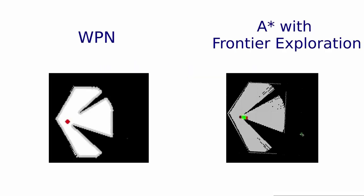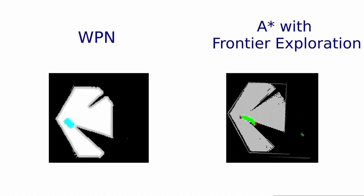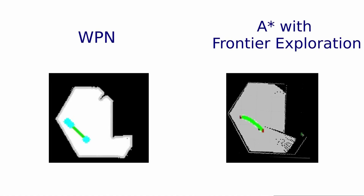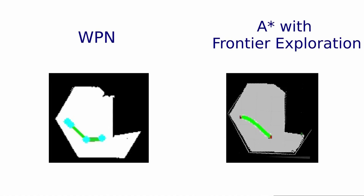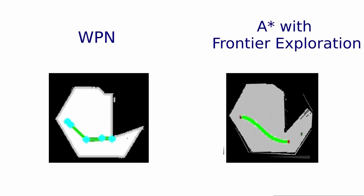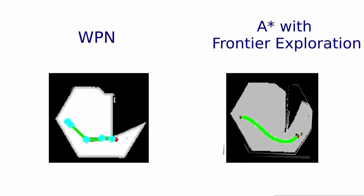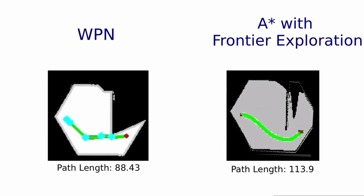Here we show one of the features of WPN, which is planning a path with partial maps. We compared WPN with A-star combined with the frontier exploration algorithm in Gazebo. WPN produces a shorter path.